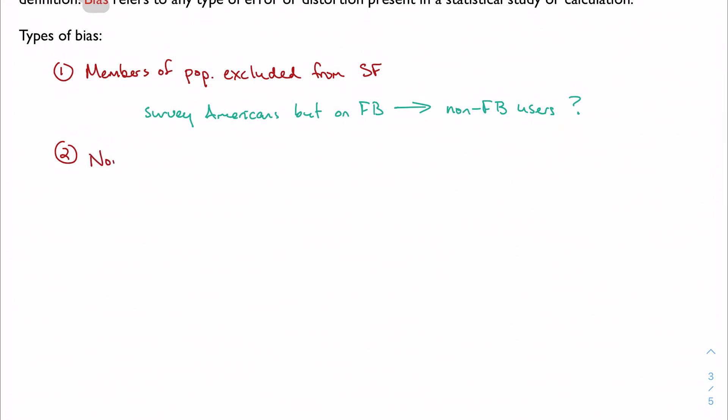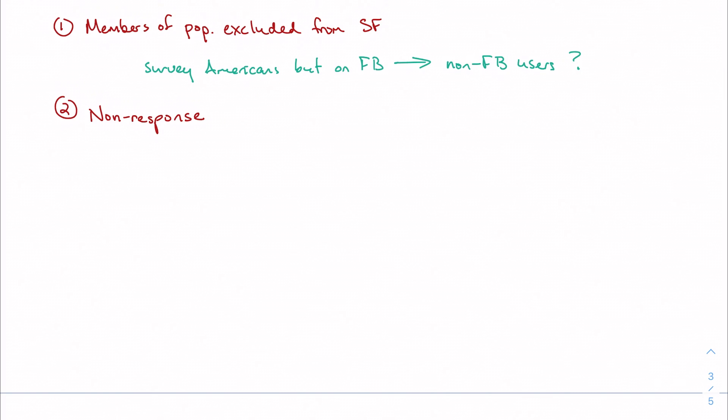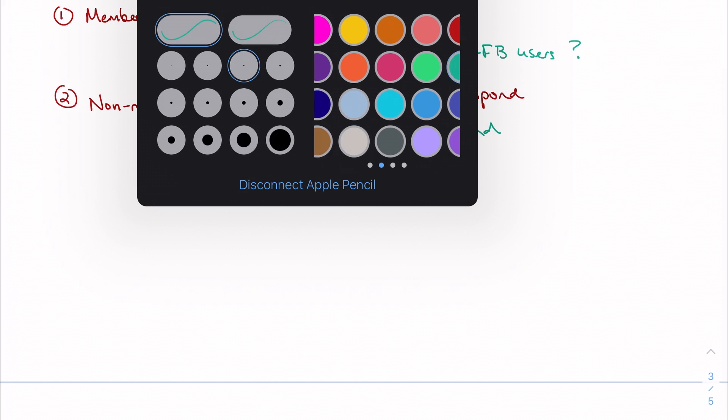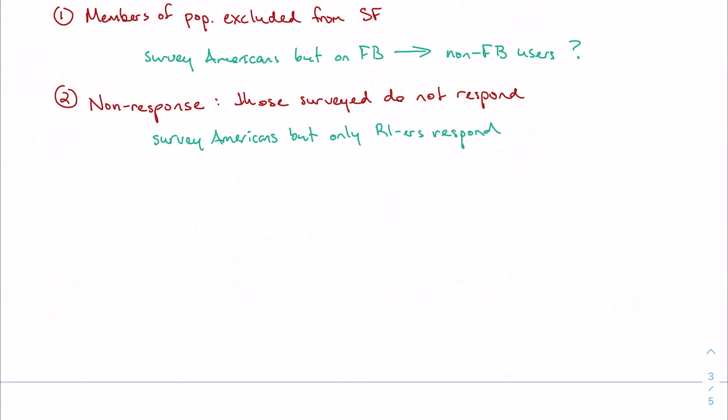Another type of bias and one that maybe you can't necessarily control is non-response bias. And that's, as the name suggests, is just where those surveyed just do not respond. So, again, maybe you survey all Americans, but only Rhode Islanders respond. Well, that's going to be a problem because as much as we like to think that we're at the center of everything, Rhode Islanders do not accurately represent the entirety of the United States. So that is going to bias the survey because my results do not faithfully represent what I'm trying to represent.